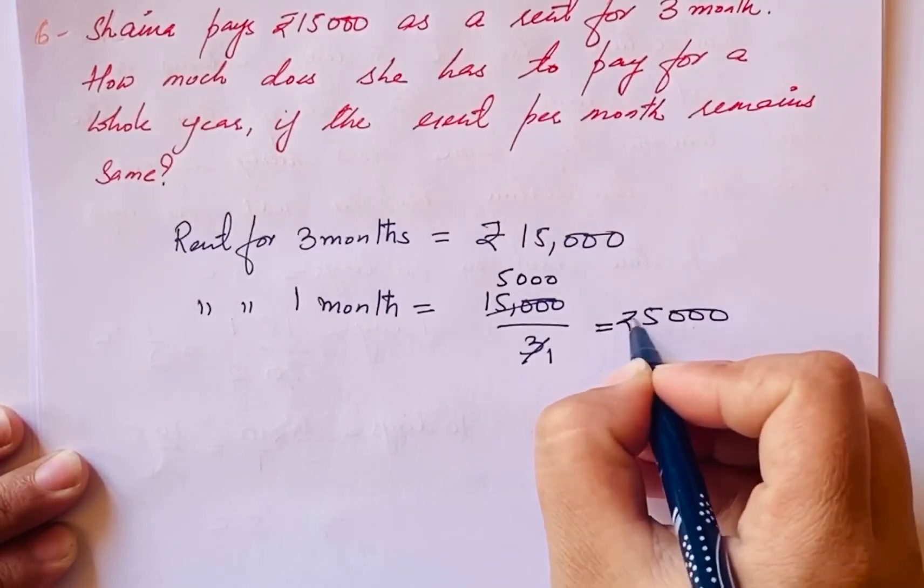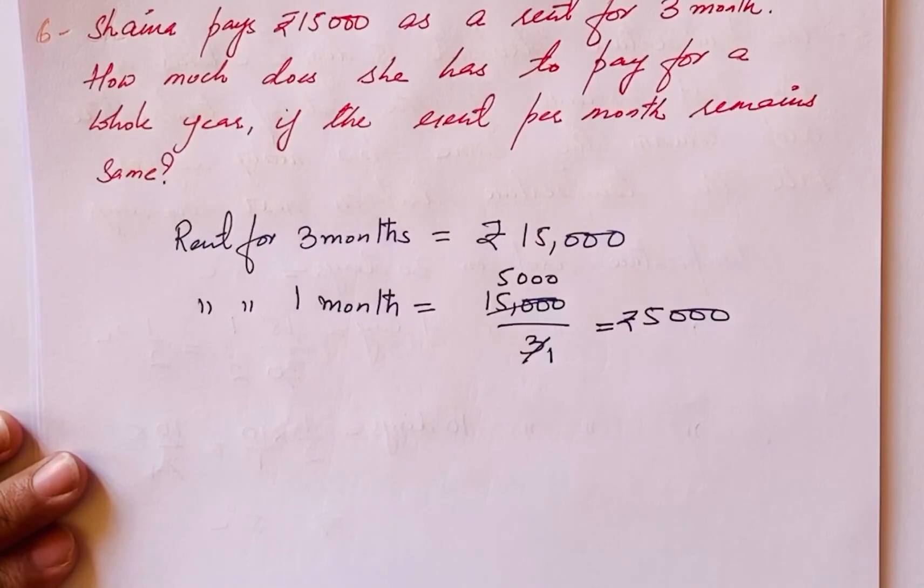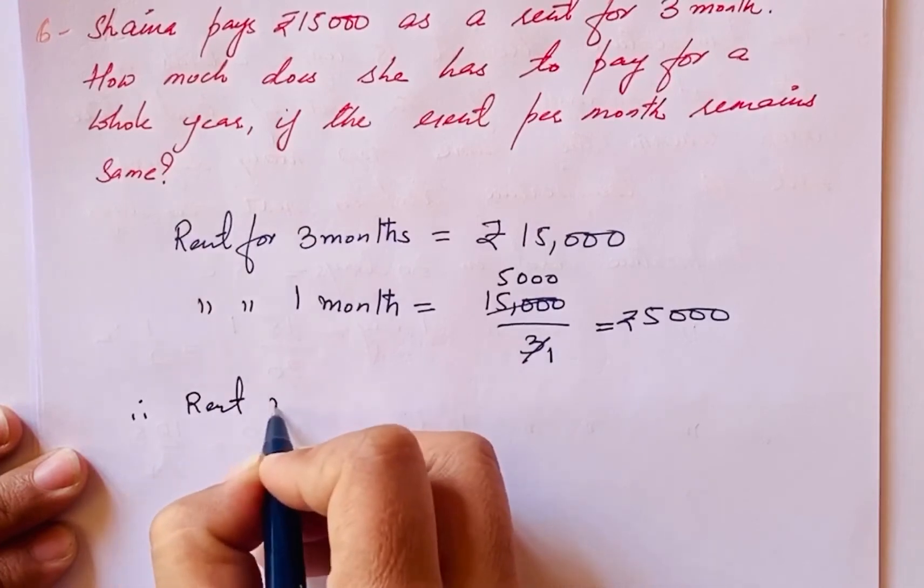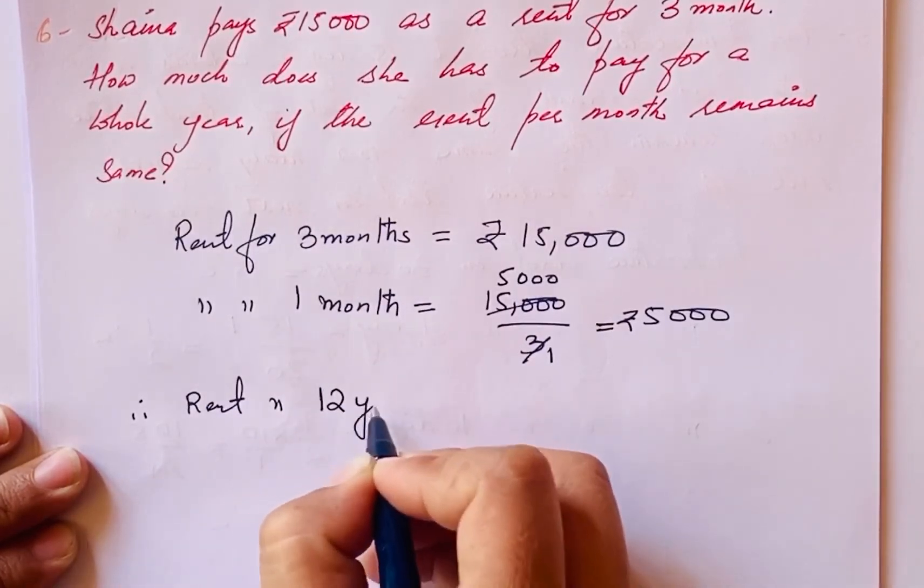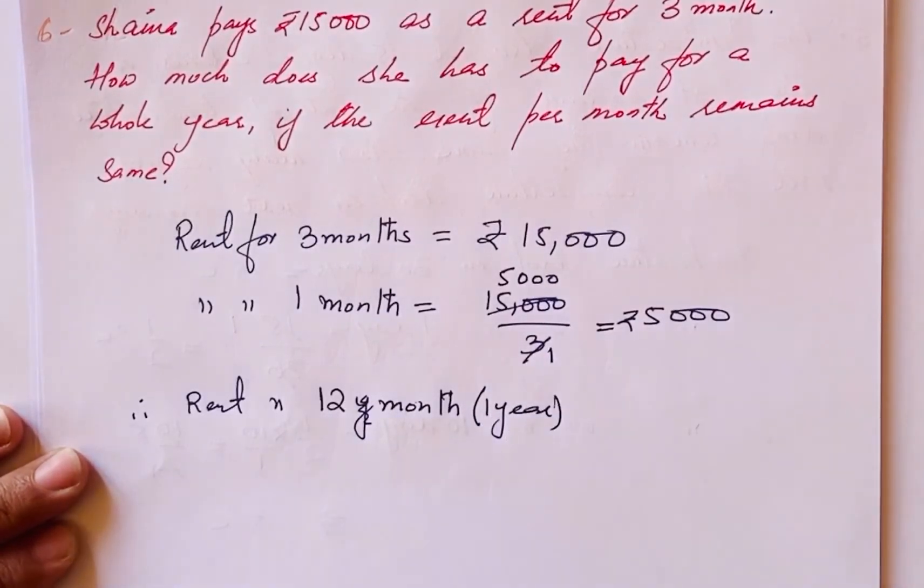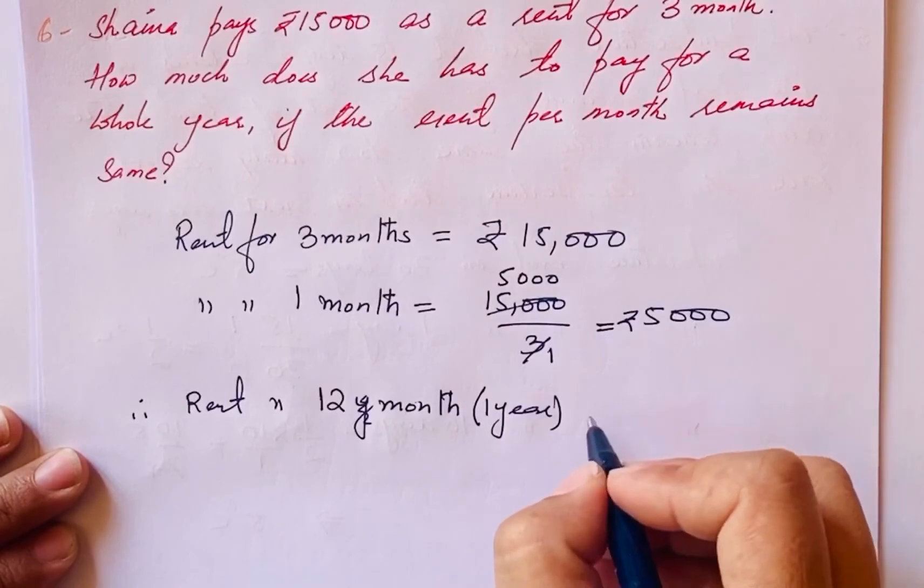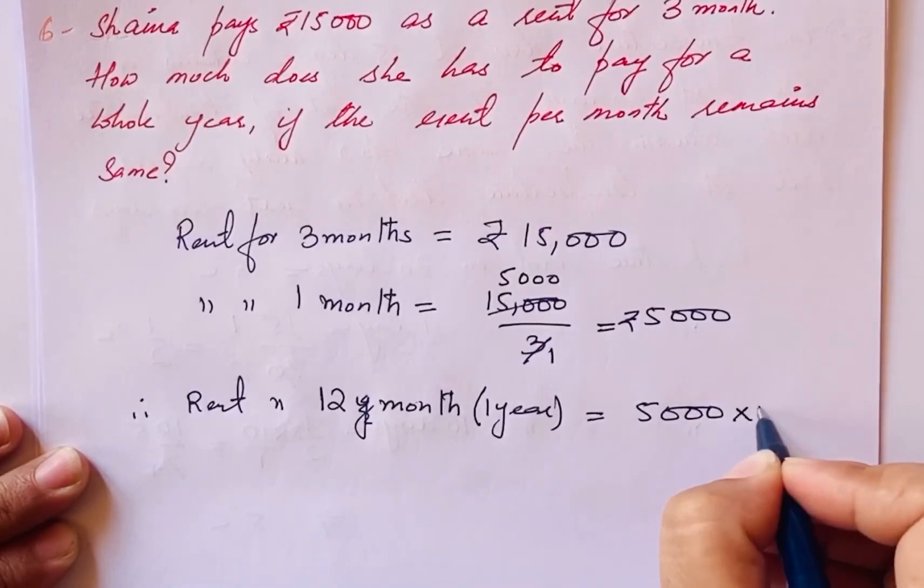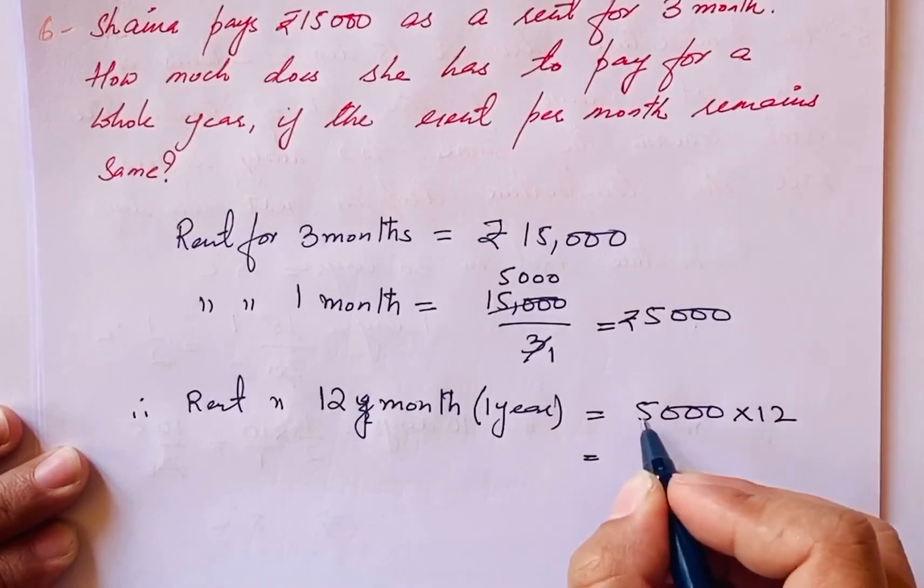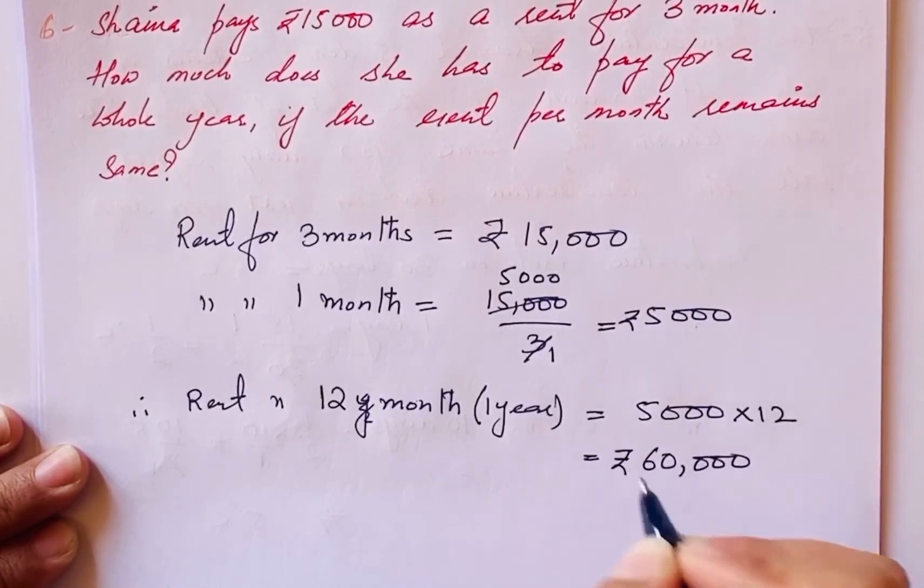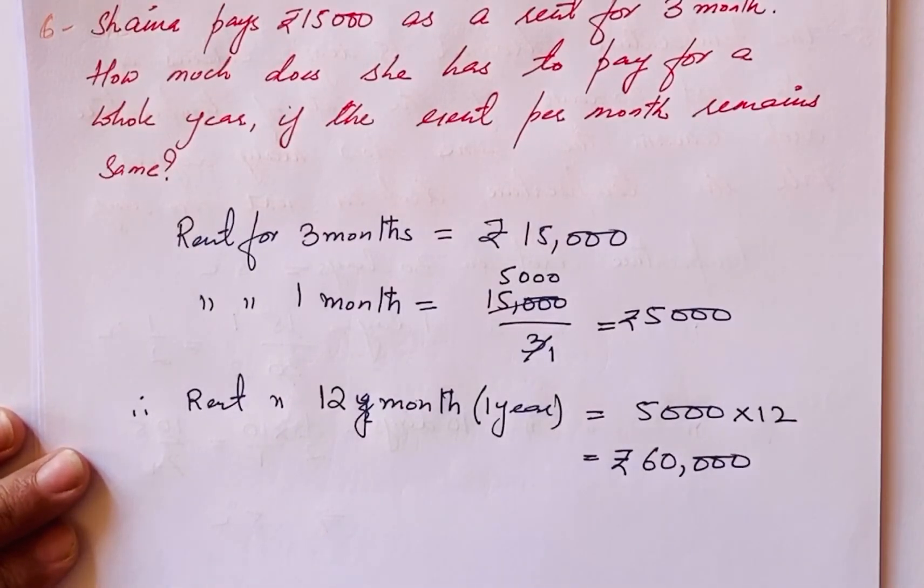She has to pay 5,000 per month. Now we calculate for the whole year. Therefore, rent for one year means 12 months. One year equals 12 months. One month costs 5,000. For 12 months, multiply by 12. Five times 12 is 60, so this is 60,000.